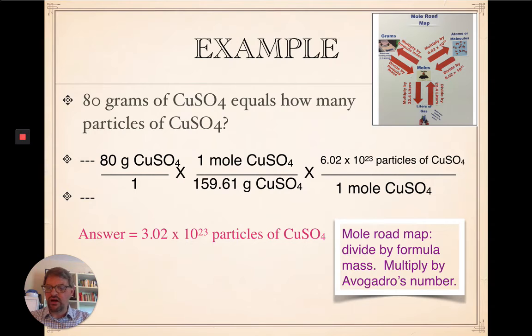So, you should have gotten 3.02 times 10 to the 23rd particles of copper sulfate, which is about half of Avogadro's number. And we're dealing here with about half a mole. Alright. A couple more here.